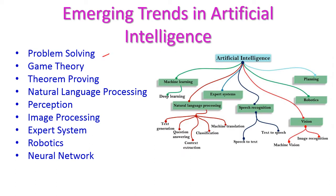The AI trends are: problem solving, game theory, theorem proving, NLP that is natural language processing, perception, image processing, expert system, robotics, and neural network. Let us see all those things one by one.